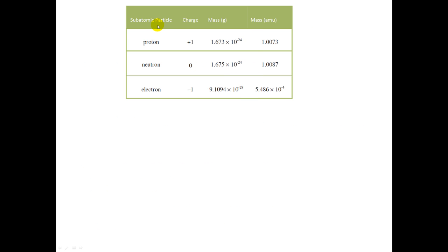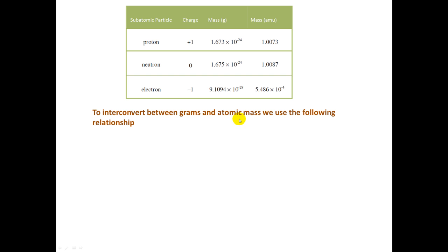Now let's look at this table. A proton has a mass of 1.673 × 10⁻²⁴ grams — a very small amount we could not measure on a lab balance. A neutron has a mass very close to that of a proton: 1.675 × 10⁻²⁴ grams. An electron has a mass of 9.1094 × 10⁻²⁸ grams — much smaller than a proton or neutron. When dealing with small particles, it's much easier to use atomic mass units. To interconvert between grams and atomic mass units: 1 atomic mass unit equals 1.6607 × 10⁻²⁴ grams.